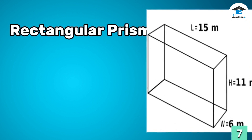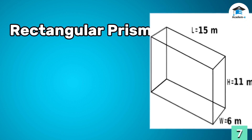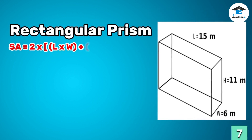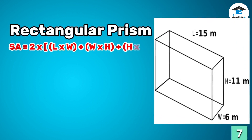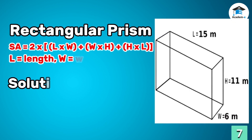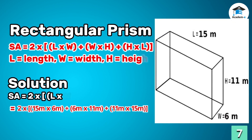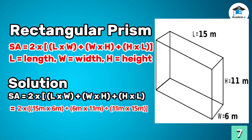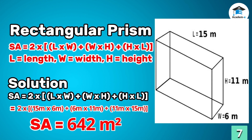Rectangular prism: to get the surface area of a rectangular prism, get the sum of the product of its length and width, width and height, and height and length, then multiply by two. Therefore, the surface area of the rectangular prism is 642 square meters.